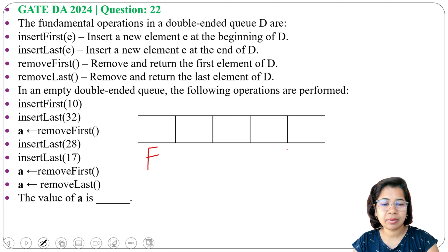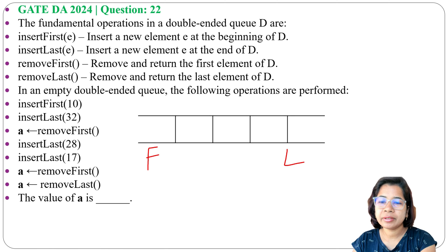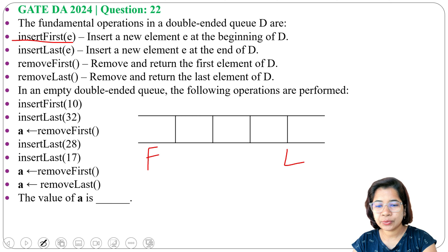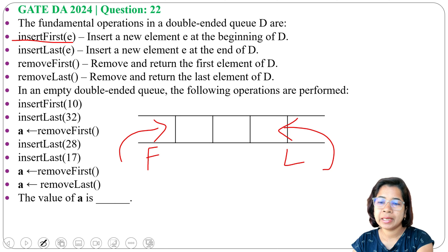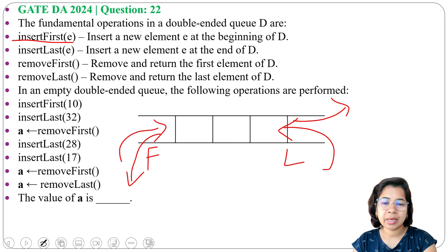Now insertFirst inserts a new element E at the beginning of D, so insertFirst means we will insert at first side. insertLast means we will insert at last. removeFirst means we will delete from the first, then removeLast means we will delete from the last. In an empty double-ended queue, the following operations are performed. The value of a is asked, and it is asking what is the final value of a.